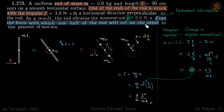The force with which one half of the rod acts on the other — the rod is going to rotate about its center of mass. As we saw in a problem roughly 6-7 problems back, the maximum force is at the center. That's what we need to find here: the force acting at the center, because that inward force gives acceleration to each part of the rod toward the inside. This interaction force at the center is what we need to find.